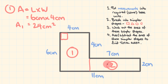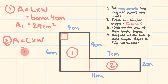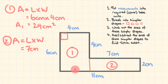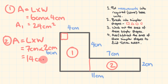Now let's work out the area of rectangle two. Area equals length times width. The length here is seven centimeters — watch out, it's not 11 centimeters, that goes all the way across. We're looking at just this section here. The width is two centimeters. Seven times two gives us 14 centimeters squared. A little hint: if you keep getting the side lengths wrong, trace them with your pen as you go — it will guide your eye and make it a lot easier.